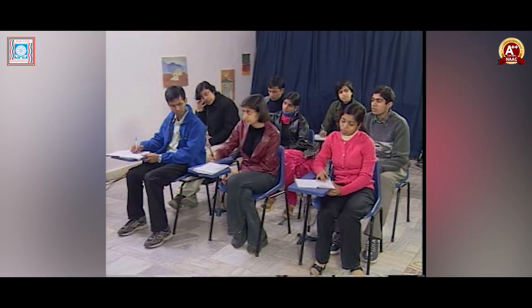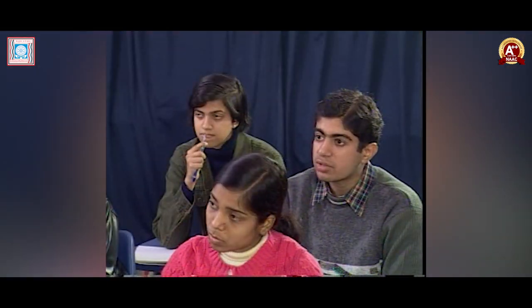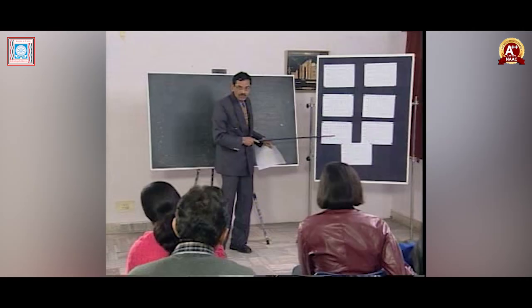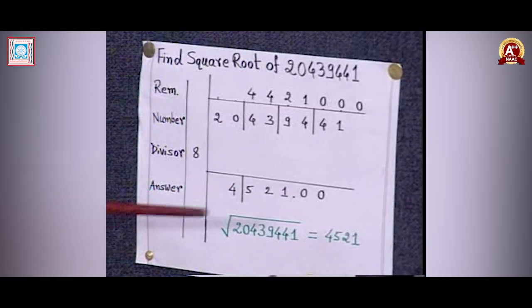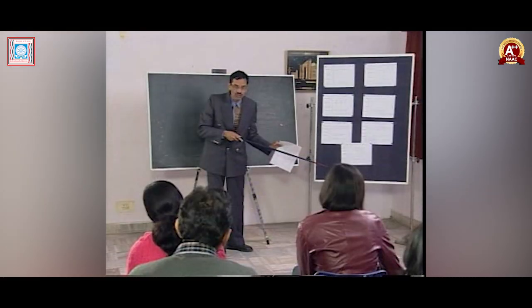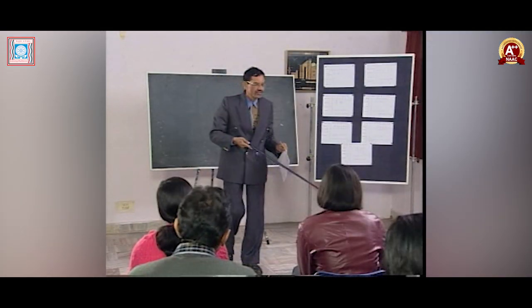A student asks why we separate the first digit of the answer and take duplexes of only the rest of the digits. The teacher explains: the digit 4 has special significance because 20 appears as the leftmost group, and 4 is the nearest integer to the square root of 20. That is why 4 is kept outside the duplex calculations. There is a theoretical reason which will be explained later.